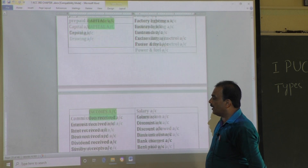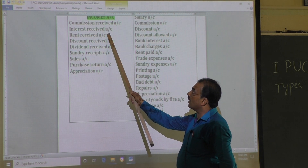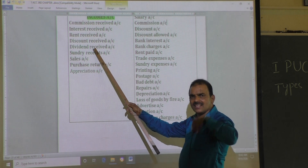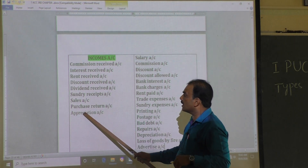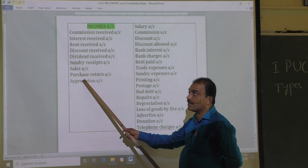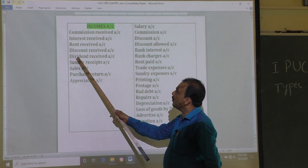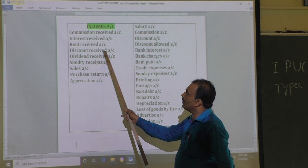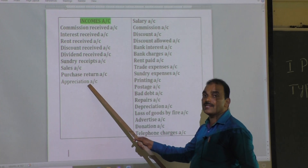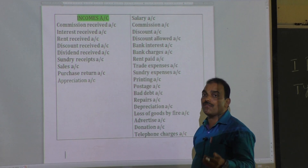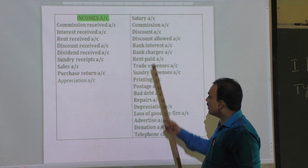Income account examples: commission received account, interest received account, rent received, sales — which is income account. It may be dividend received, discount received, rent received, or appreciation (which means increase in the value of an asset) — all are income accounts.